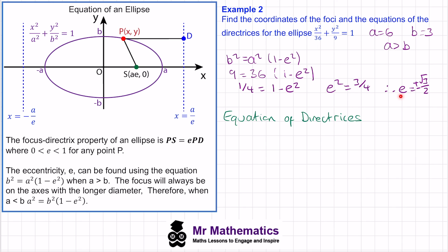Now that we have the eccentricity value, we can find the equations of the directrices using x equals plus or minus a over e. So x equals plus or minus 6 divided by (root 3 over 2), which simplifies to x equals plus or minus 4 root 3.